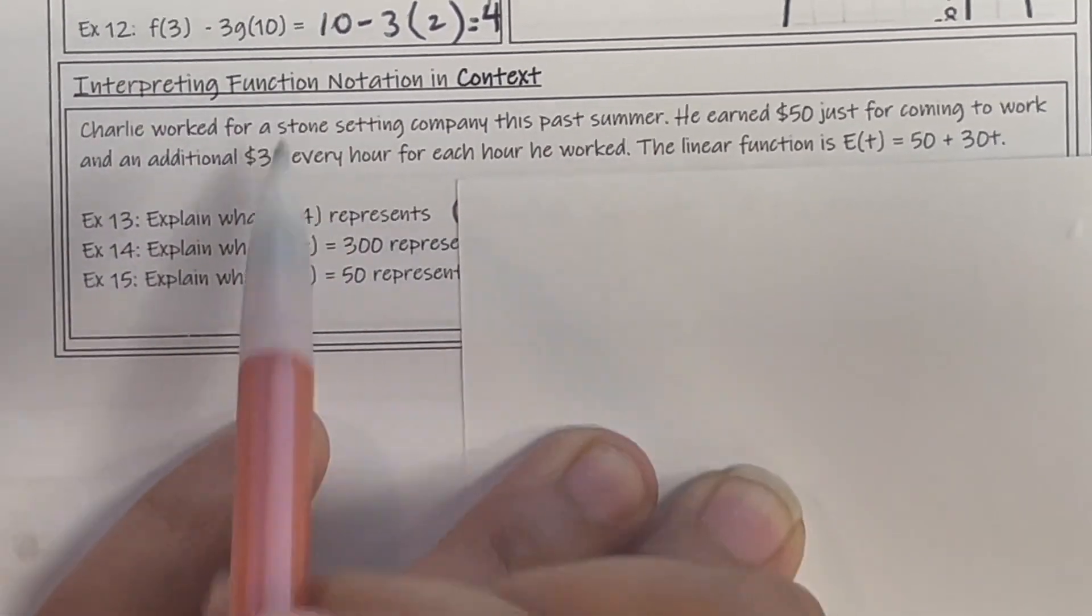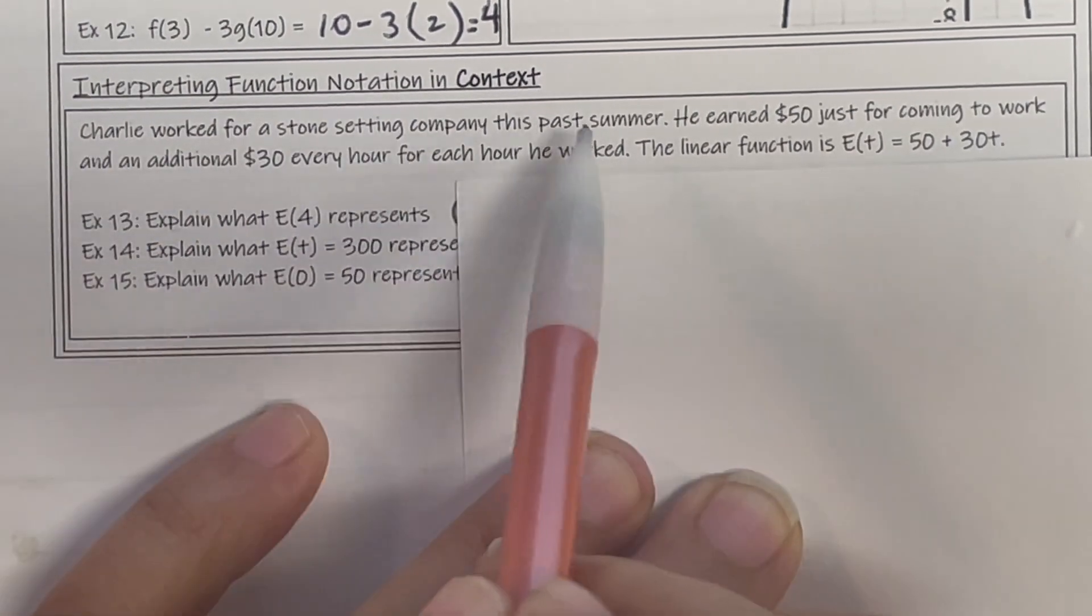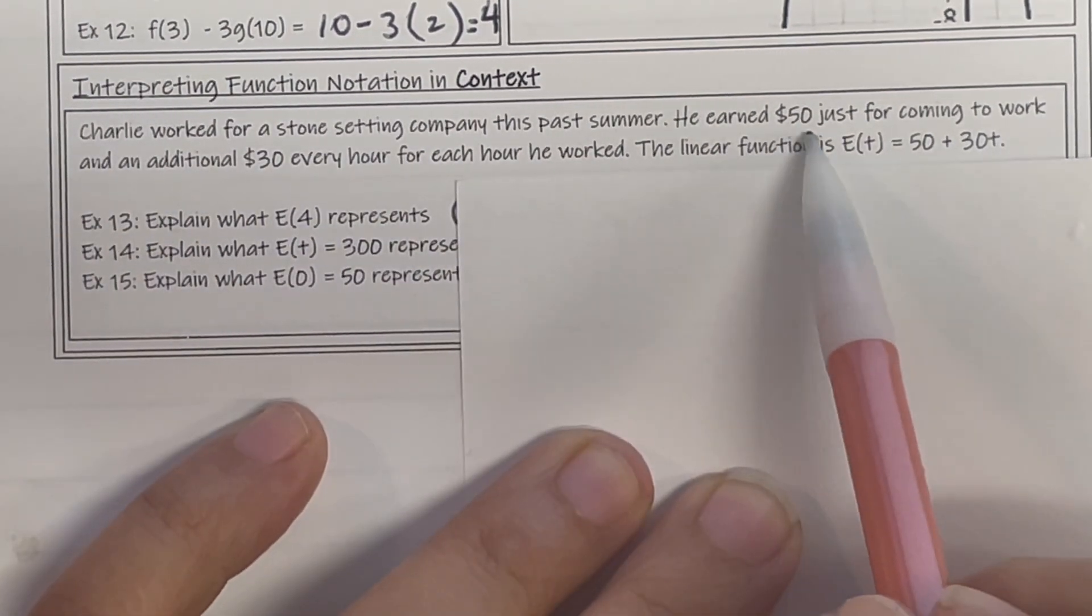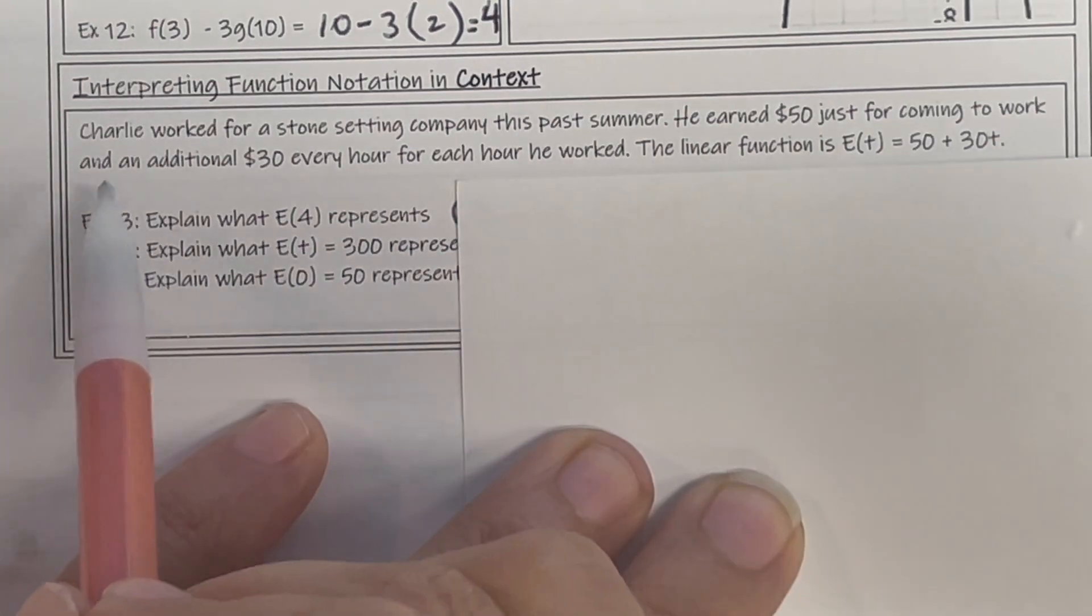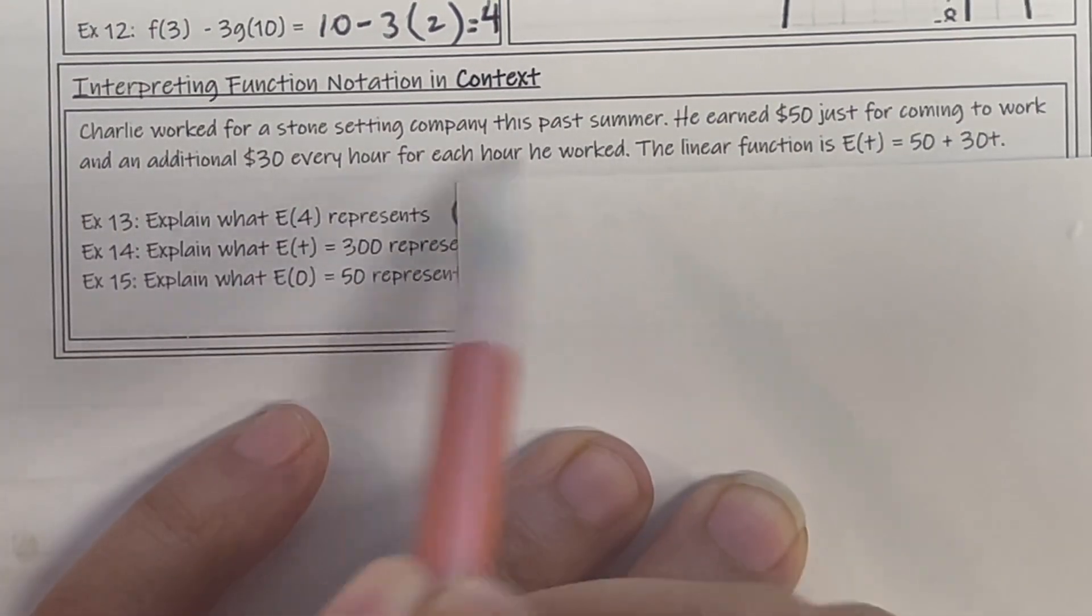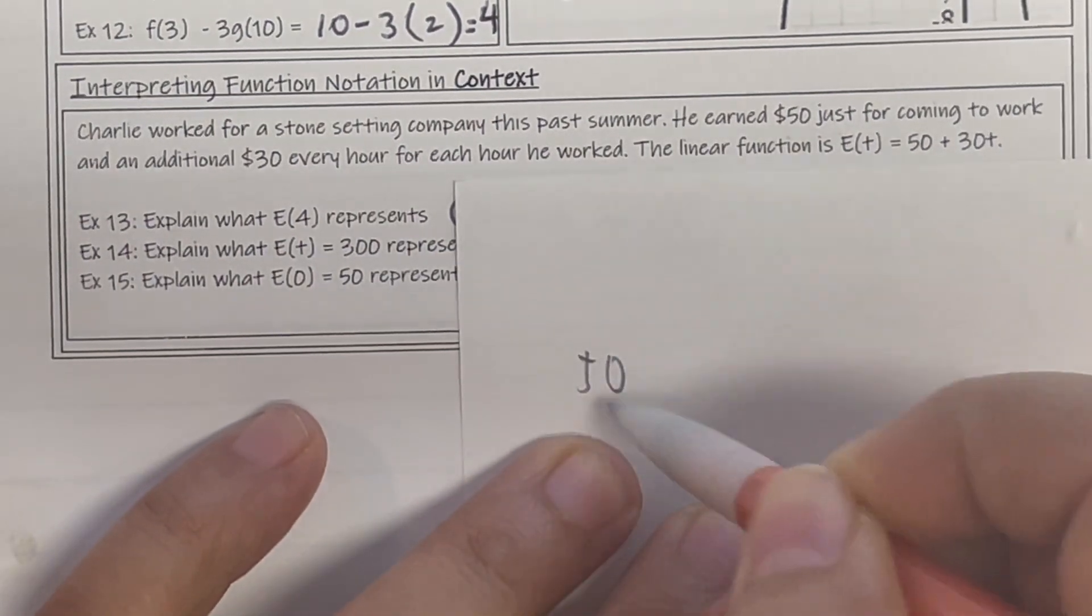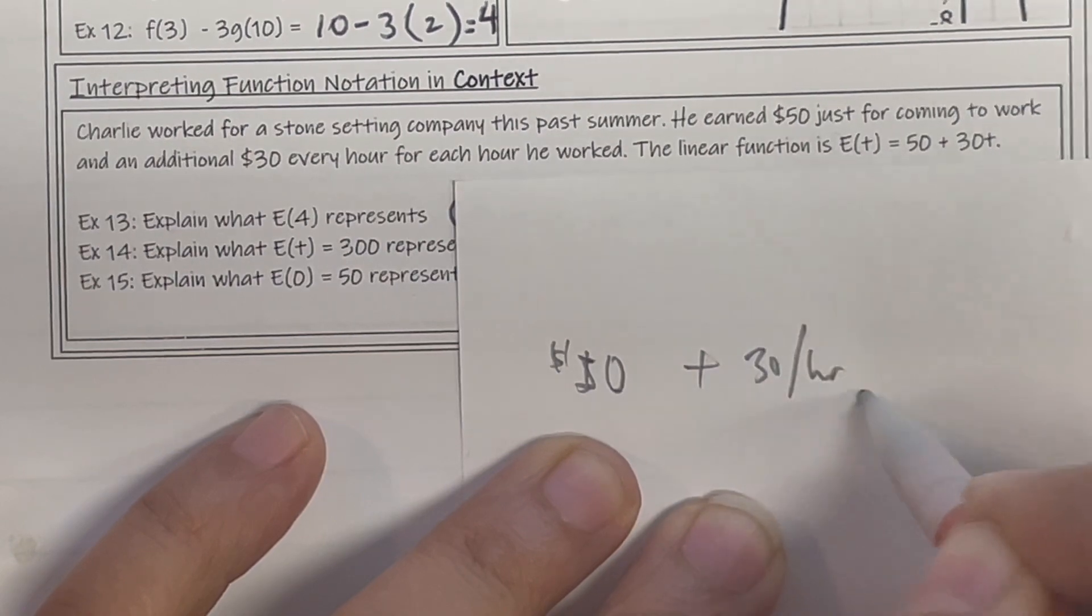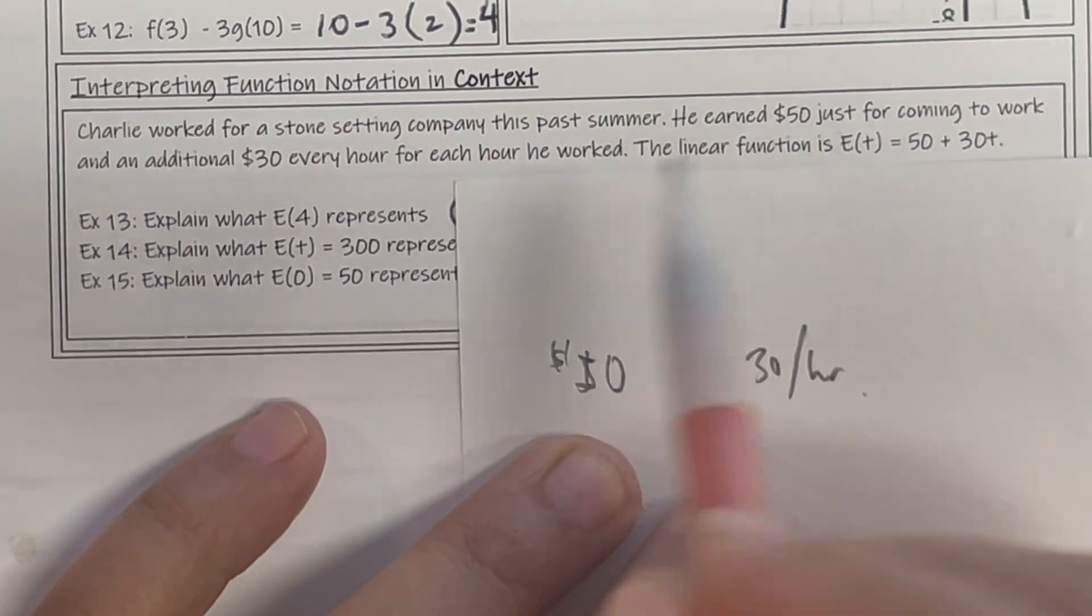So Charlie, Ms. Ainley, worked at a stone setting company this past summer. Ms. Ainley mowed the lawn. He earned $50 for coming to work and an additional $30 an hour for every hour worked. So I get $50 just for coming in, then I'm going to add $30 per hour every time. The linear function is E(t) = 50 + 30t.